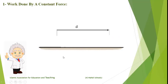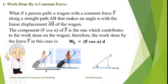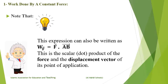So here we have displacement. What if we have an oblique force, like a girl holding a bag? If a person pulls a wagon with a constant force along a straight path making an angle alpha with the linear displacement AB, then the component F cosine alpha contributes to the work done on the wagon. Therefore, the work done by F is F cosine alpha times D. The component F sine alpha does no work since there is no motion along the vertical — only along the horizontal. So work is expressed as F cosine alpha, which can be written as the scalar dot product F⃗ · AB⃗.